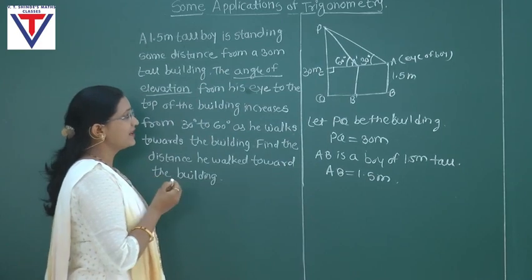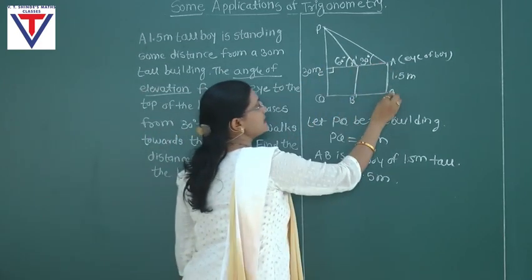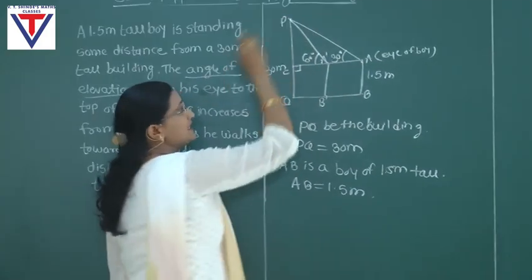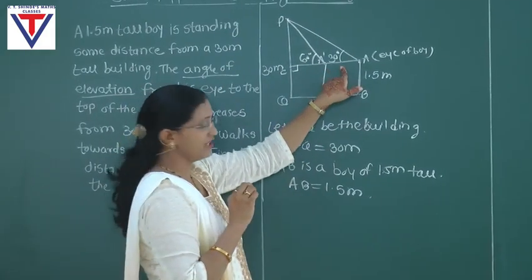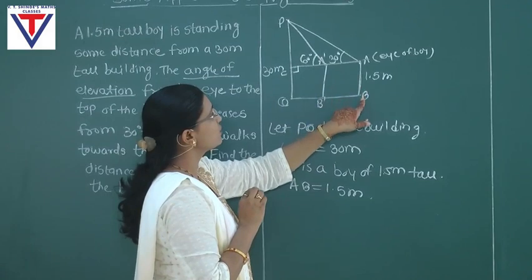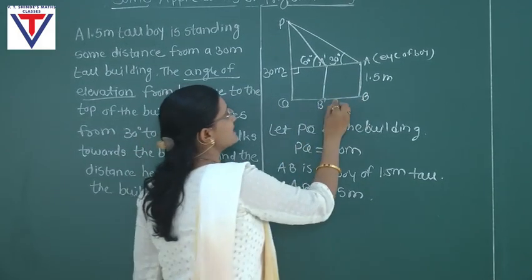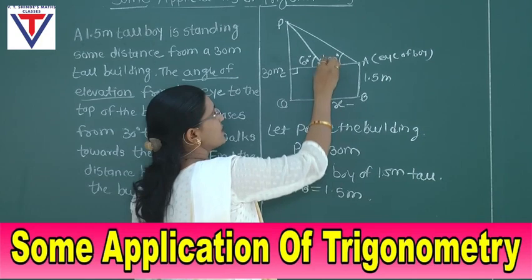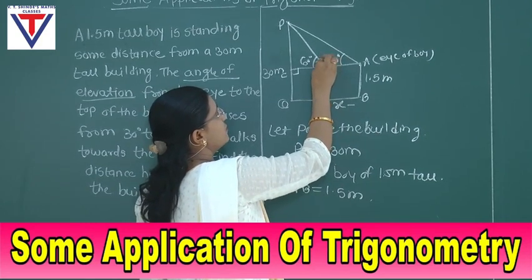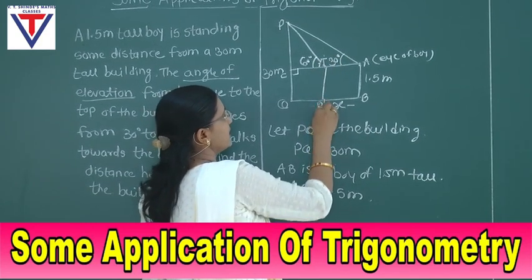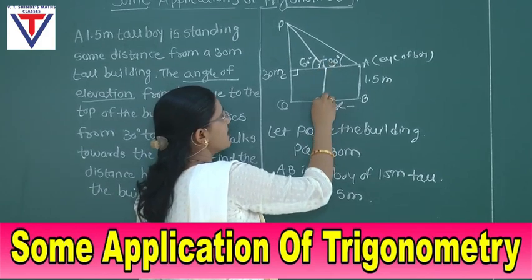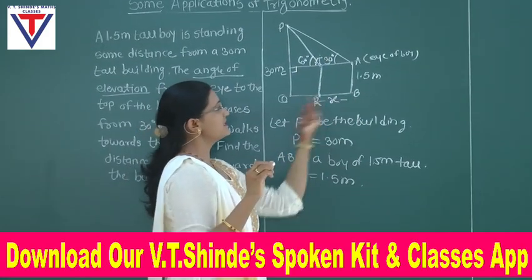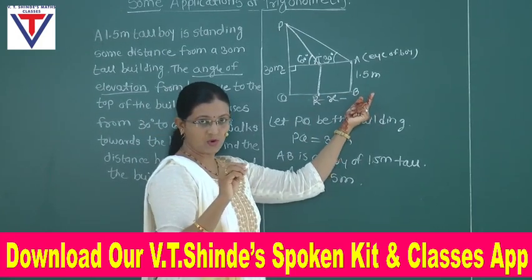AB is the initial position of the boy. There he was looking at the top of the building and the angle of elevation was 30 degrees. After that, he covered a distance. Let's consider this distance to be x. The new position is TR. He covers the distance BR.